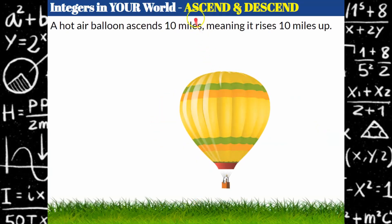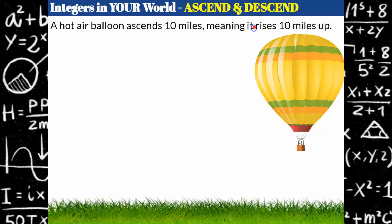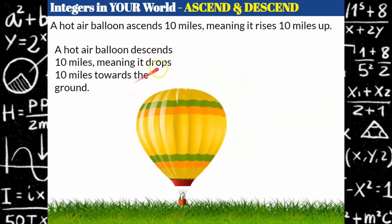We have a hot air balloon and we're going to talk about vocabulary words: ascend and descend. Our hot air balloon rose — it went up — that's ascending. Ascending means to rise. So if the hot air balloon ascends 10 miles, it rose 10 miles up. Airplanes also do this. Descending is when you go down — if a hot air balloon descends 10 miles, it drops 10 miles towards the ground. Using the word descend represents a negative value. When it ascends, it went up positive 10; descend is negative 10, representing that it dropped, fell, or lowered.